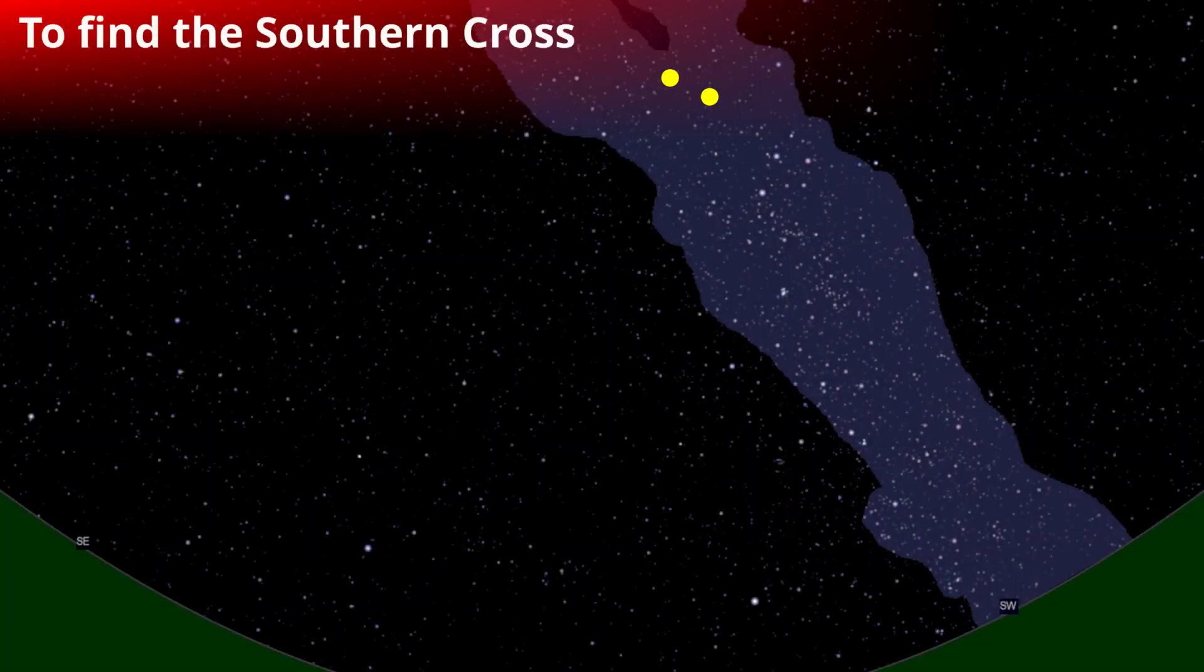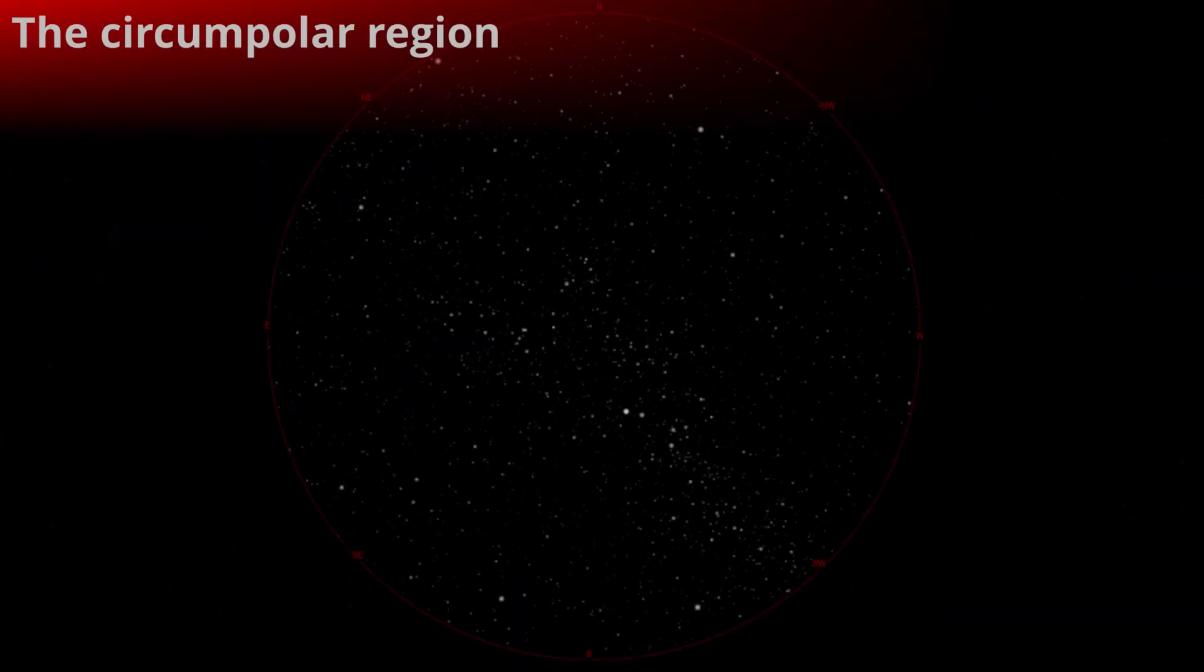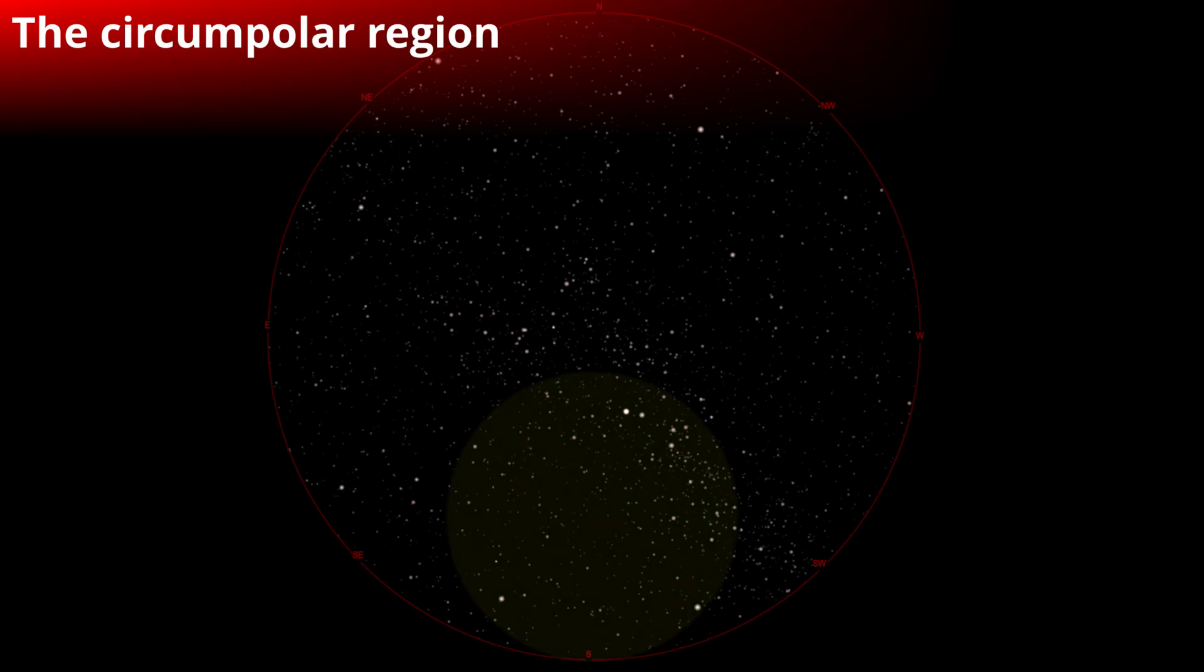To find the Southern Cross, you have to first find two stars called the Pointers, which are quite bright and close together. These are also circumpolar stars called Pointers because they always point to the Southern Cross. The circumpolar region stretches from the horizon to about 80 degrees high. It has a radius of about 40 degrees, exactly the same as the latitude here, and the center is the south celestial pole. The celestial pole's altitude in the sky is exactly the same as your latitude on Earth.